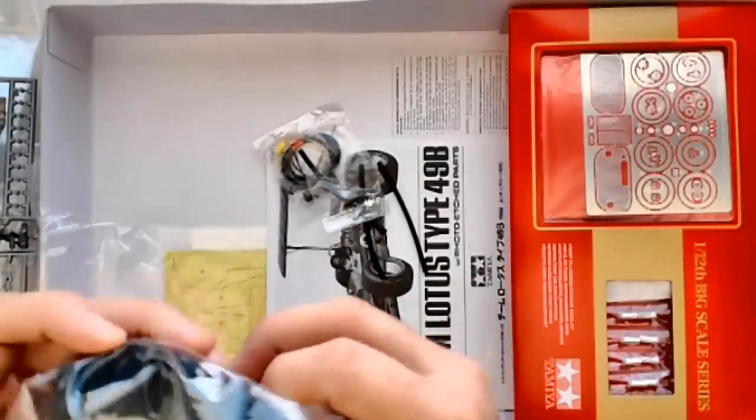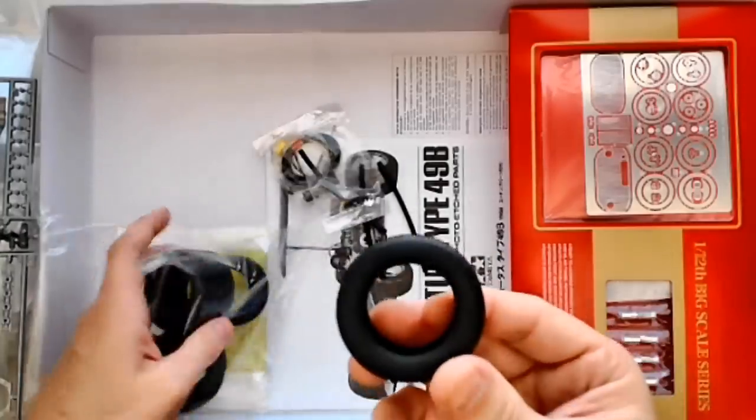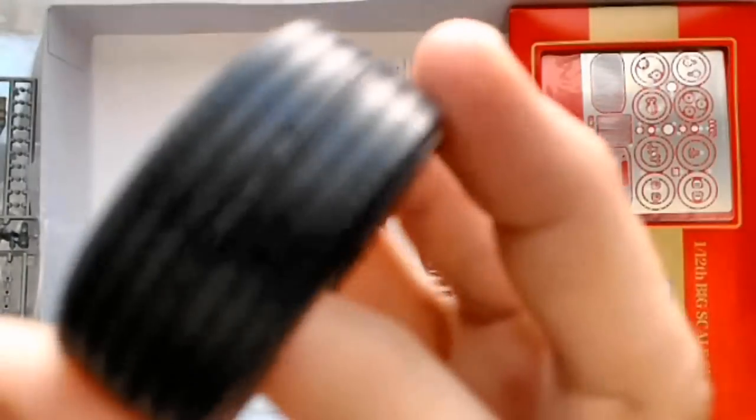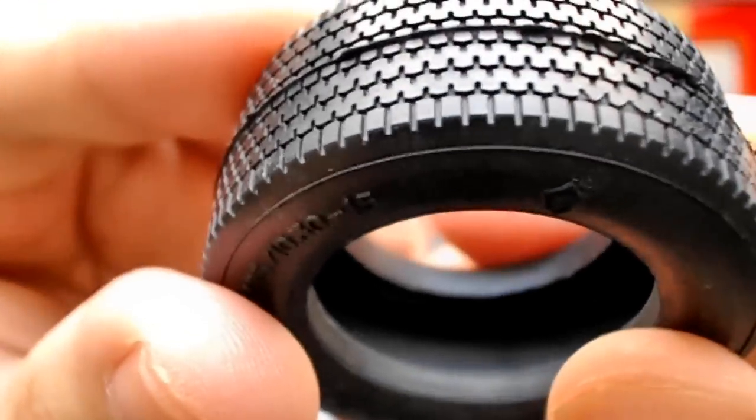And then the tires, which are two rear, two front. The rear are obviously wider than these, but let's give you some detail here. You can see it was almost going to come in focus. There we go. Is that Firestone? Yeah, Firestone. And it says the size. The tread pattern looks pretty good. There is a seam down the middle that does have some necessary cleanup there.